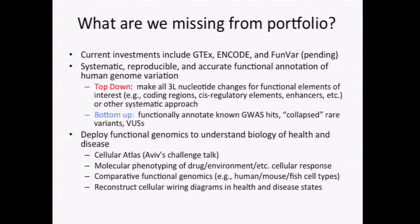From Jay's talk yesterday and from the discussions, what came out was a view that it'd be great to come up with a systematic, reproducible, and accurate functional annotation of human genetic variation. There are sort of what we call top-down and bottom-up approaches, which are not either-or. It's a question of how much you invest going from existing variants implicated by genome-wide association studies or rare-variant association — putative loss-of-function variants — versus a top-down approach like making all 3L changes where L is the length of some element, all single-step changes for some functional element of interest.